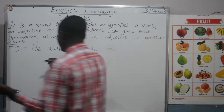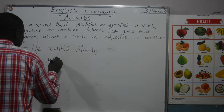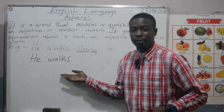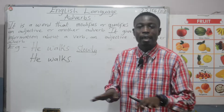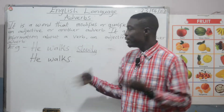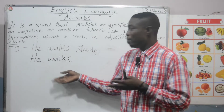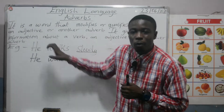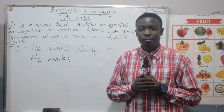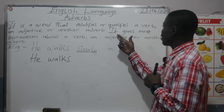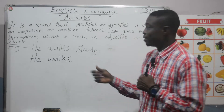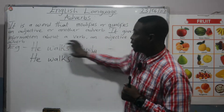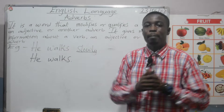We could have just said 'he walks,' which is right — it makes enough sense. But adding 'slowly' to it means we are describing how the walking was done. That is what an adverb does: it gives more information about a verb. So, 'slowly' is giving more information about the verb.